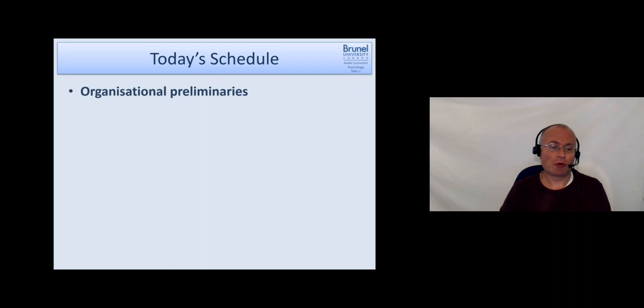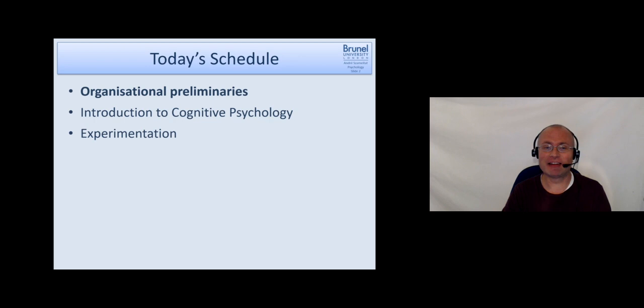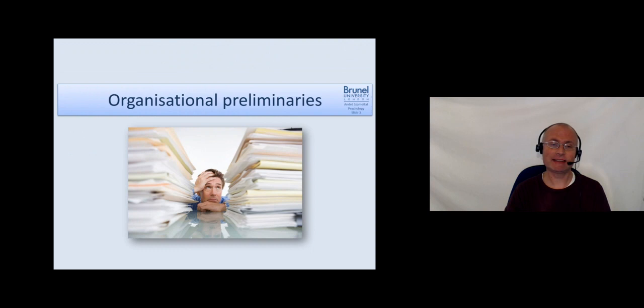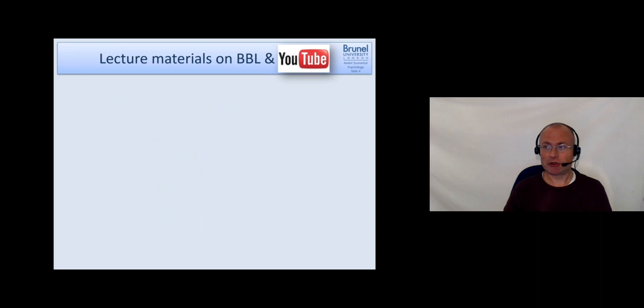Let's see what we're going to do this week. I will split this week's lecture into four different parts: the first part is about organizational preliminaries, then an introduction to cognitive psychology, then experimentation as the basis of how we get data in cognitive psychology, and finally frameworks for explaining cognition.